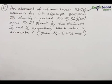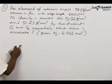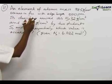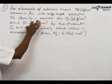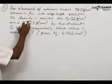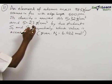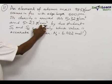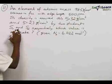Problem number 11: An element of atomic mass 98.5 gram per mole occurs in FCC type unit cell with edge length 500 pm. Its density is arrived as 5.32 gram per centimeter cube and 5.23 gram per centimeter cube by two students S1 and S2 respectively.